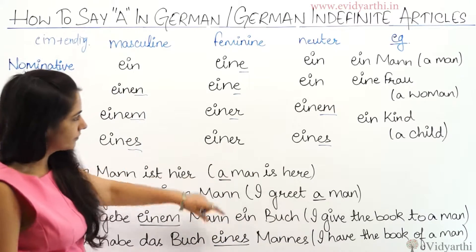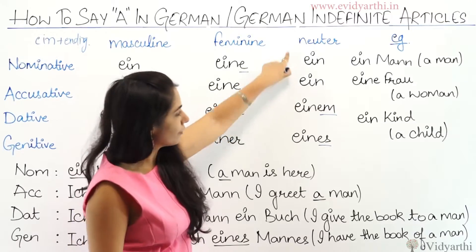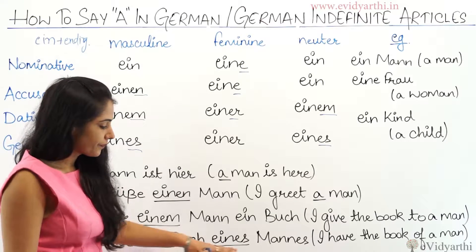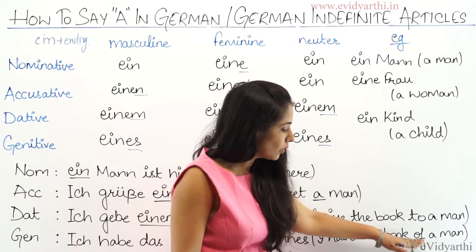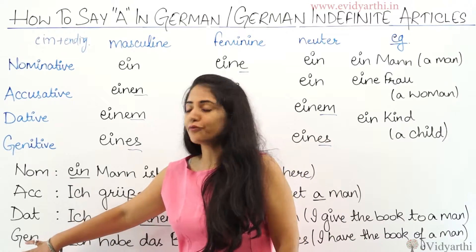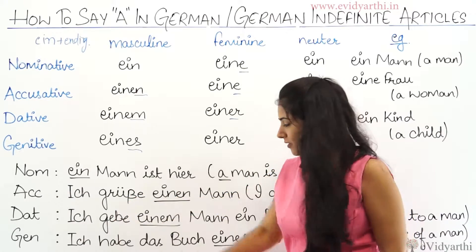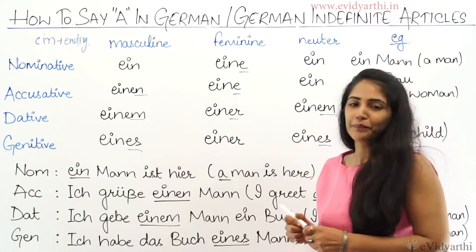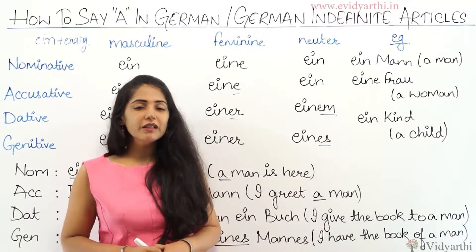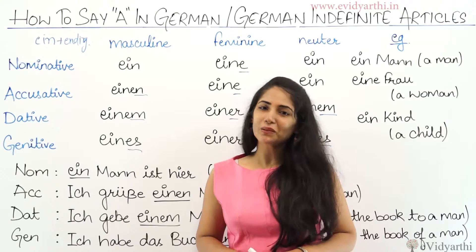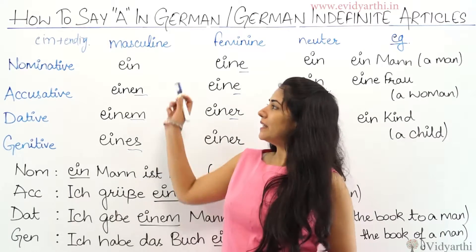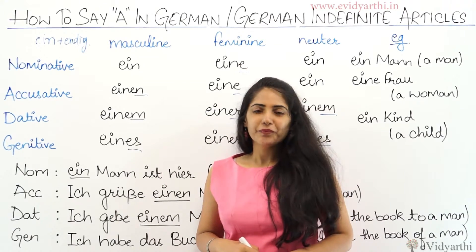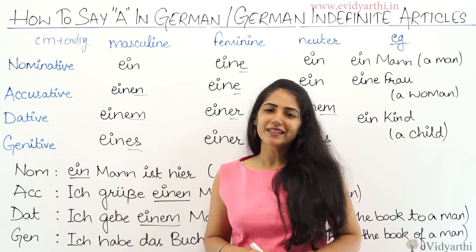Accusative neuter: 'ein Buch' comes from the accusative neuter form. For genitive: 'Ich habe das Buch eines Mannes' means 'I have the book of a man'. Genitive shows possession. If you have any questions please write in the comment box below and try to form a sentence using indefinite articles in any case and any gender. See you in the next session — ciao!